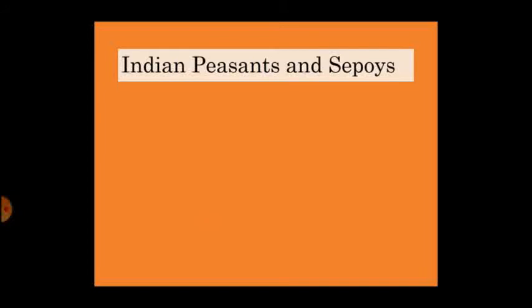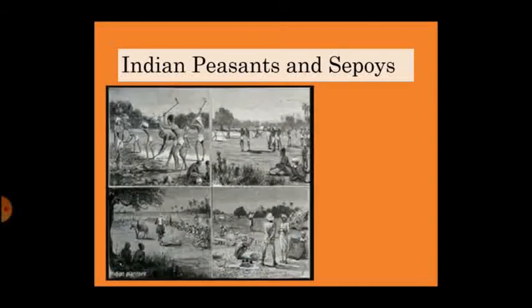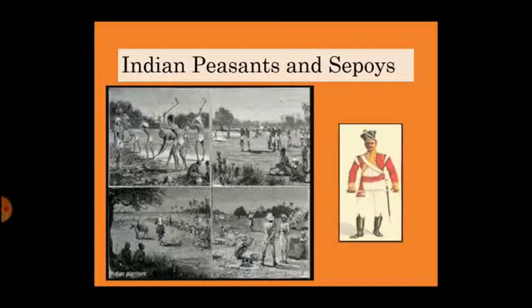Let us now know about the economic reasons responsible for the Revolt of 1857. In the countryside, the peasants and zamindars resented the high taxes and the rigid methods of revenue collection. Many failed to pay back their loans to the moneylenders and gradually lost the land they had tilled for generations.